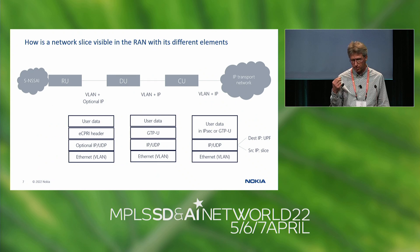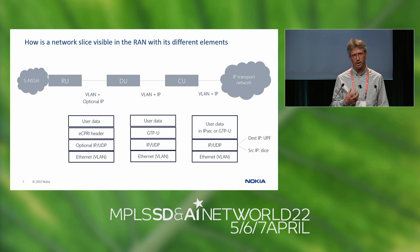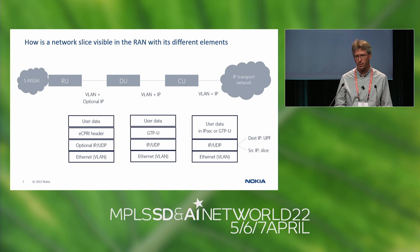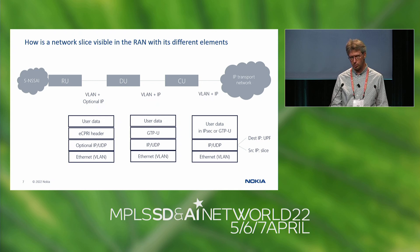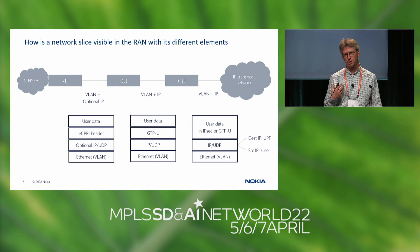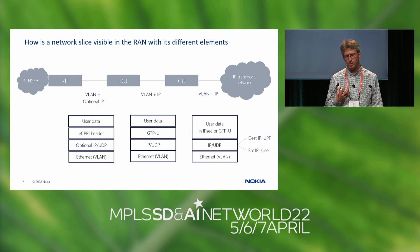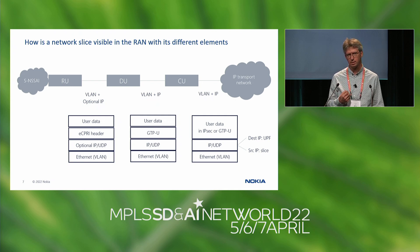How is a slice visible within the RAN element? A 5G RAN these days can be split into a Remote Unit, a Distribution Unit, and a Central Unit. The connection between the Remote Unit and the Distribution Unit uses eCPRI, whose header has an Ethernet header but an optional IP header — so slice identification there is likely via a VLAN. Between the DU and CU, and from the CU into the backhaul, there is an IP header and VLANs can also be used to separate slices.